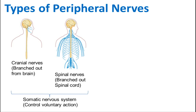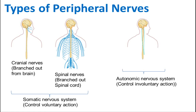There are also nerves that control involuntary actions — actions not really controlled by you. For example, your heartbeat: you can't control your heartbeat, so that is an involuntary action. The nerves that control involuntary actions are called the autonomic nervous system. So we have the somatic nervous system that controls voluntary actions and the autonomic nervous system that controls involuntary actions.